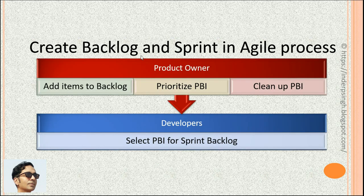In summary, the process to create backlog and sprint in Agile is: the Product Owner adds items including bug fixes to the Product Backlog, prioritizes each PBI and cleans up the PBIs as needed. Then, for each Sprint, the developers select the PBIs, estimate each of them and commit to deliver them in the Sprint.